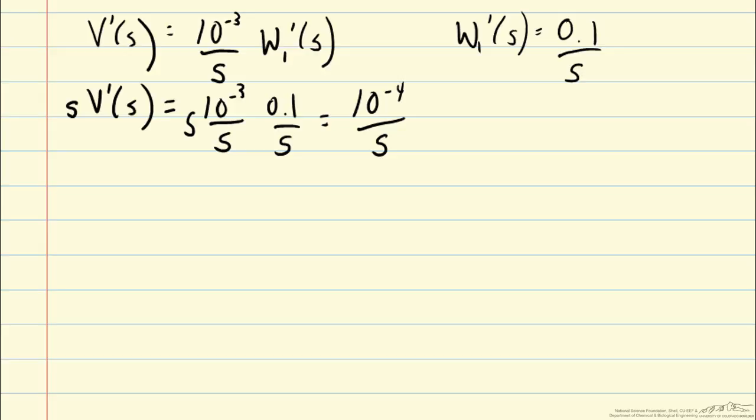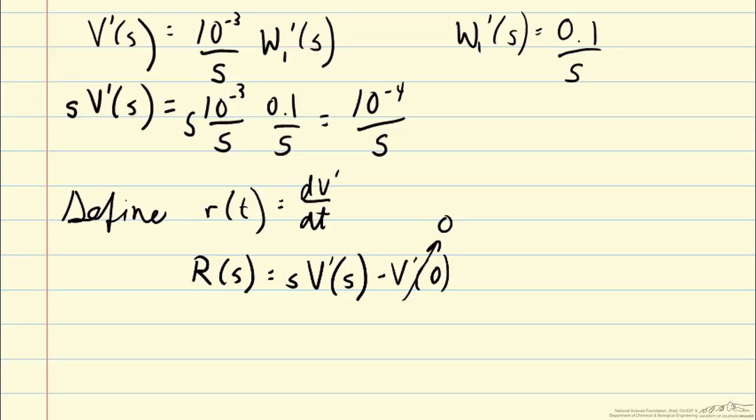But what we can do is to define the rate as a new quantity. So r(t) is the rate of change of volume dV prime dt, and that will be bounded under a step input in w1. So we can take the Laplace transform to get r(s) equals sV prime of s minus V prime of 0, which we've been assuming is 0 here.